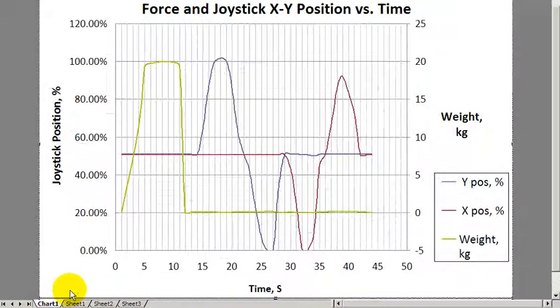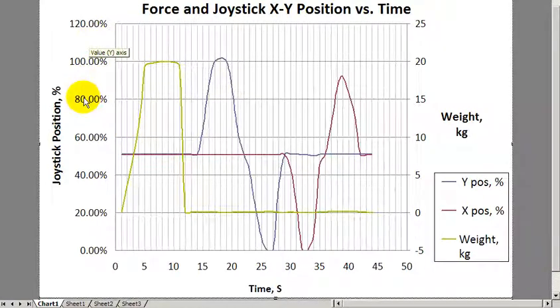Next, we plotted that on a chart. A double axis, a double y-axis chart. We see on the left the y-axis is joystick position percent. And that is, looking at the legend here, the blue and the red ones.